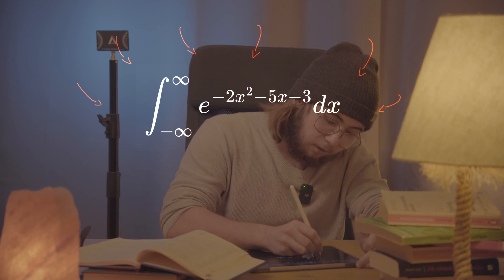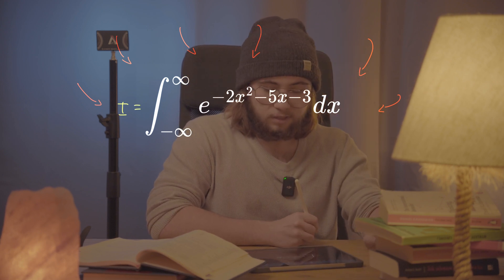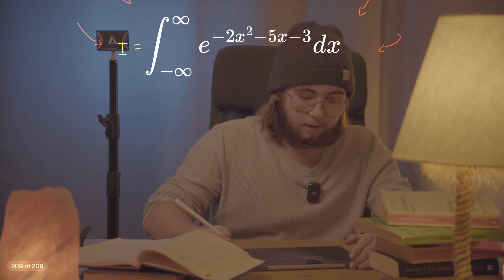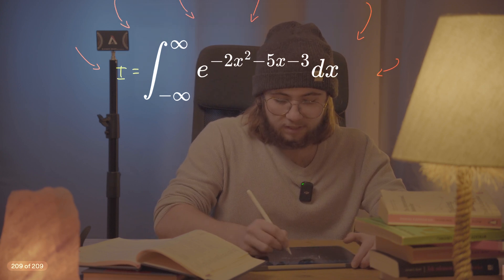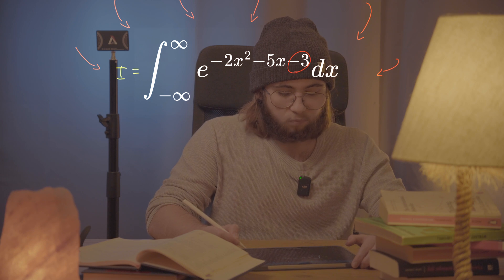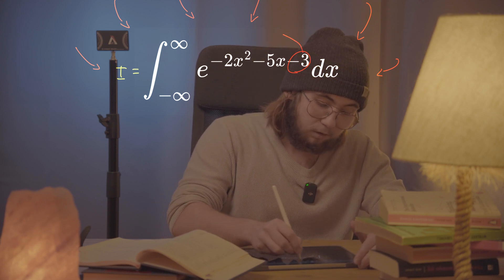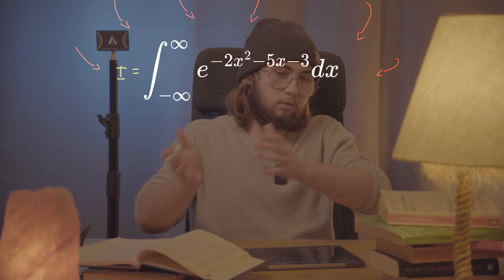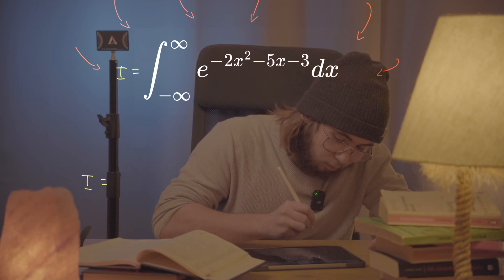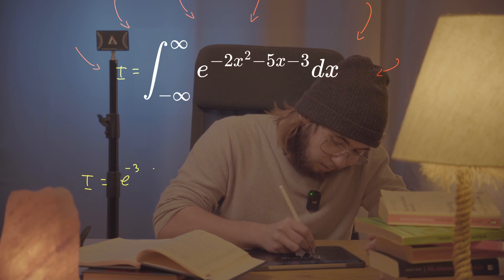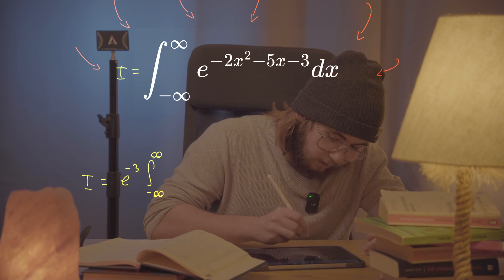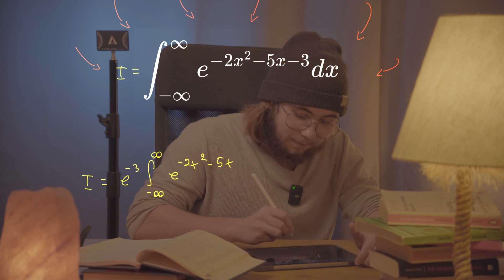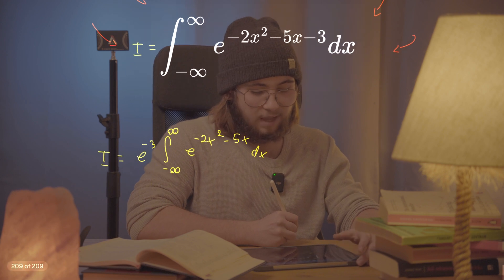First of all, I'd like to denote this integral as I — it helps me keep track of where I'm at with the problem. Now, how can we rewrite our integral? First, I'd like to get rid of the negative 3 by taking it out of the integral, since it's equivalent to multiplying the entire integral by e to the power of negative 3. So I equals e to the negative 3 multiplied by the integral from negative infinity to infinity of e to the power of negative x squared minus 5x, dx.